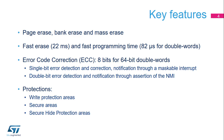In the case of a non-correctable error, the flash memory controller asserts the non-maskable interrupt, or NMI, to the Cortex-M33. The following protection mechanisms are supported: write protection areas used to protect against unwanted write operations; secure areas only accessible in secure state; and secure hide protection areas that can be programmed as non-accessible after a control bit is set.